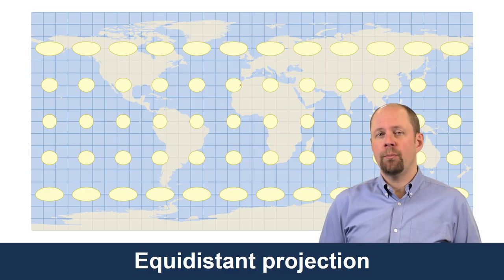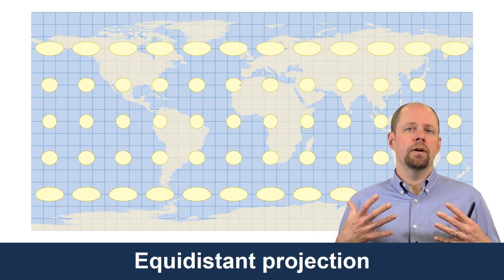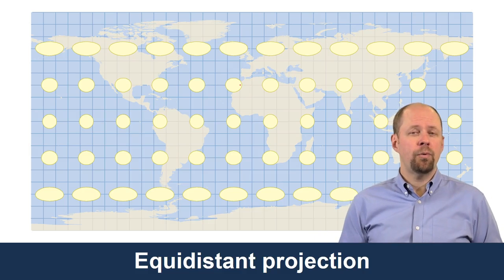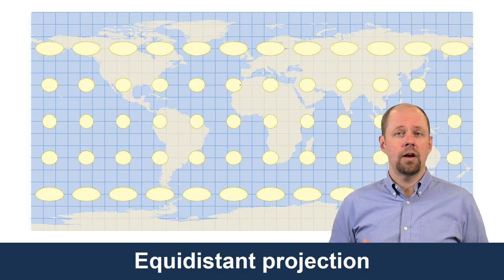Let's have a look at properties of map projections, and in particular, distance and direction. Let's start with a fairly straightforward map projection. This is an equidistant projection known as the Platte Carrée, it's French.